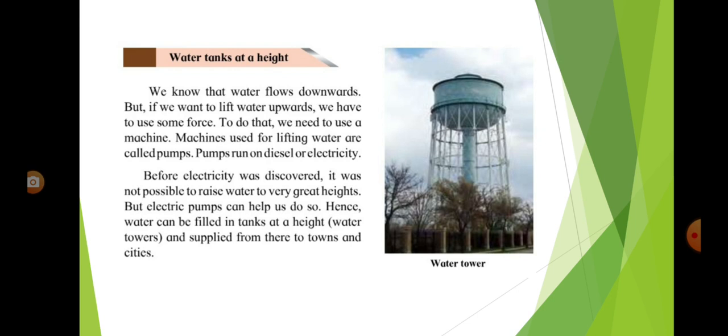Water tanks at a height. We know that water flows downwards. But if we want to lift water upwards, we have to use some force. To do that, we need to use a machine. Machines used for lifting water are called pumps. Pumps run on diesel or electricity.